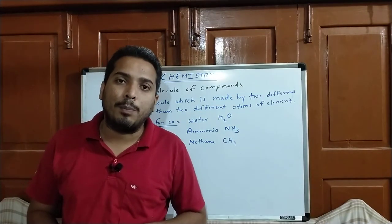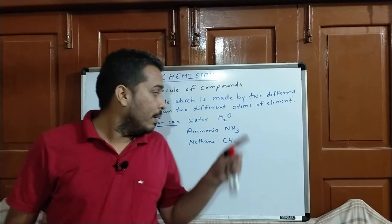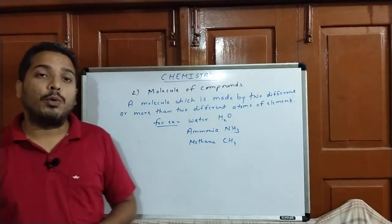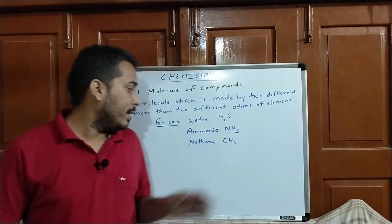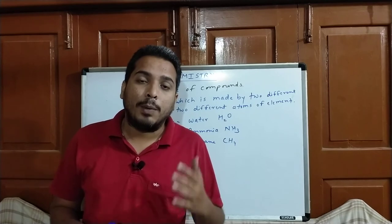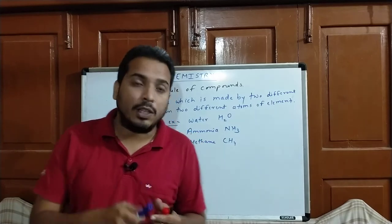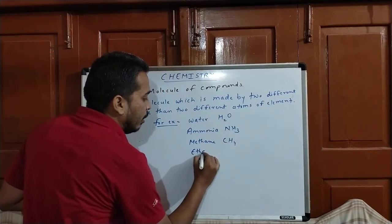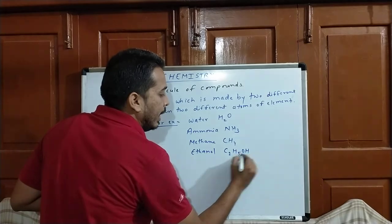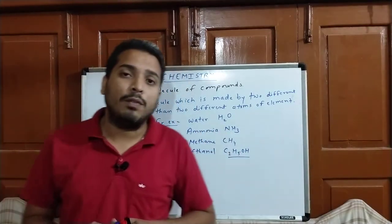In the molecule of compound, two or more elements are present. For example, water H2O is made by hydrogen and oxygen. Ammonia NH3 is made by nitrogen and hydrogen. Methane CH4 similarly. And alcohol — ethanol — has more than two elements present. The formula of ethanol is C2H5OH. In this molecule, three different elements are present. So it is called molecule of compound.